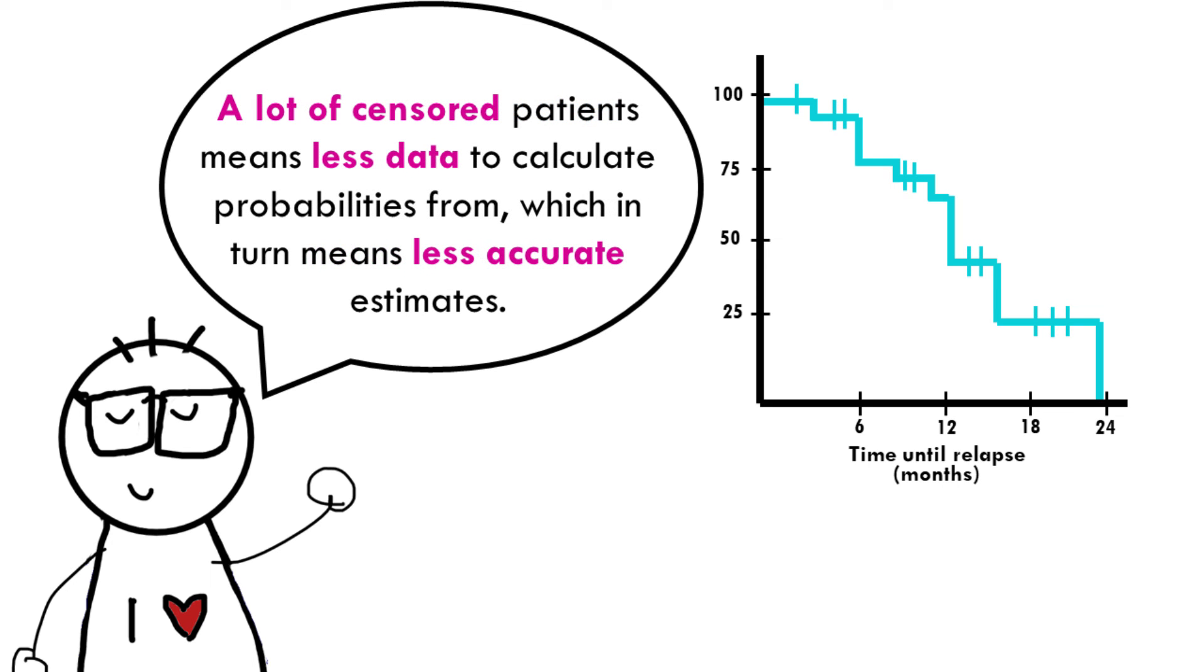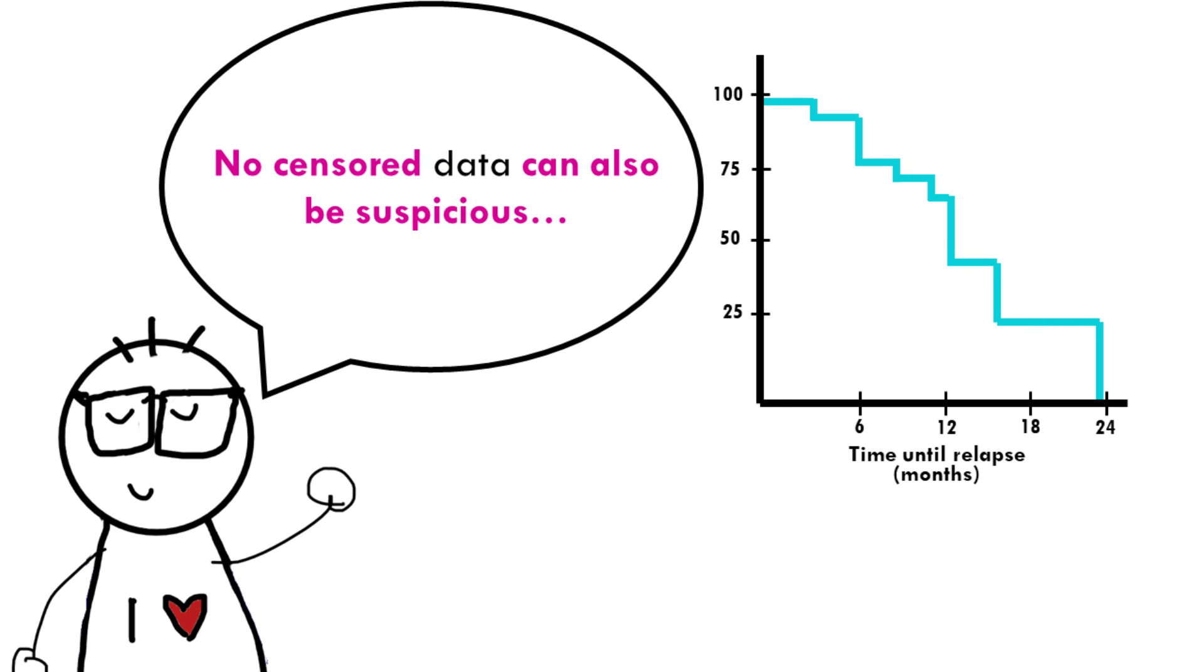In relation to this, the amount of censored data and the distribution of censored patients is also important. On one hand, a lot of censored patients means less data to calculate probabilities from, which in turn means less accurate estimates. But also, from a clinical point of view, you might ask yourself why there are so many censored patients—how was the study carried out, or if the treatment was so ineffective that so many patients left the study to try different therapies. On the other hand, a curve that does not have any censored data at all can be a bit suspicious.